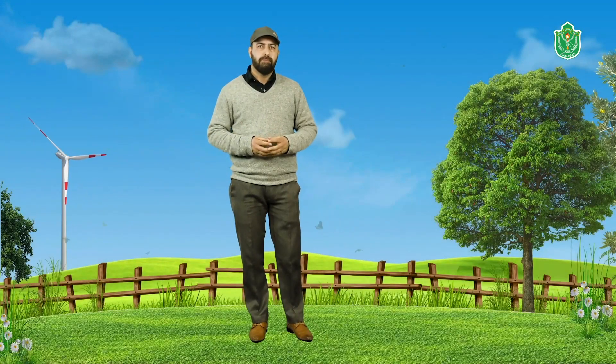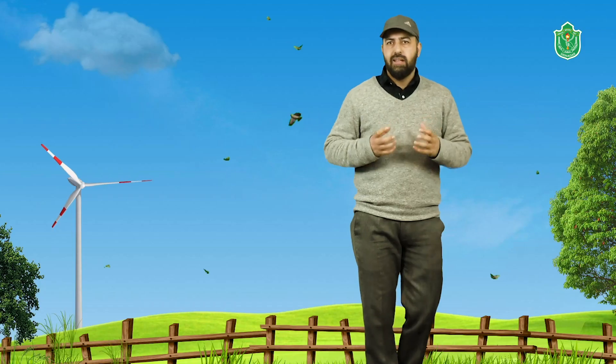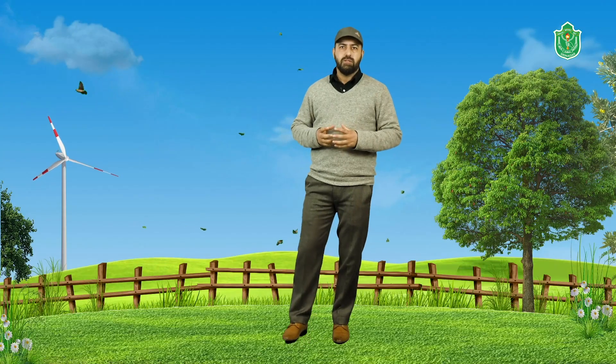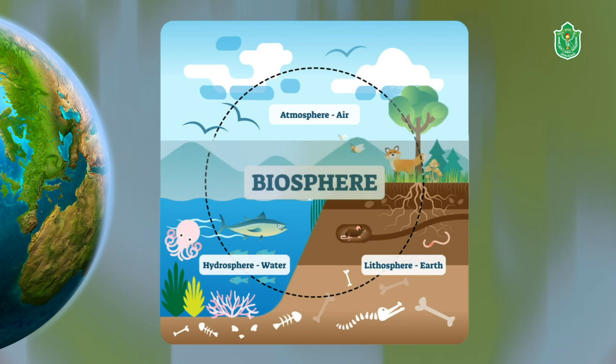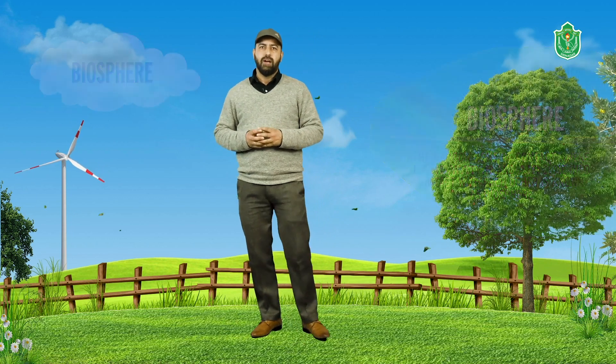Dear students, in the previous topic we were learning about the four major domains of the earth, where we learned in detail about the lithosphere, hydrosphere, and atmosphere. Let's learn more about the next domain, that is the biosphere. What is biosphere? The narrow zone of contact where land, water, and air come into contact with each other is known as biosphere.